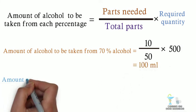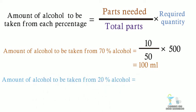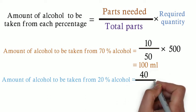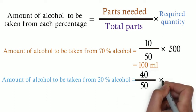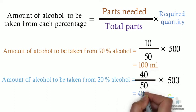Amount of alcohol to be taken from 20% alcohol is equal to 40 divided by 50 multiplied by 500. By simplifying we get 400 ml.